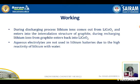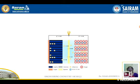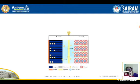During the discharging process, lithium ions come out from lithium cobalt oxide and enter into the intercalation structure of graphite. During recharging, lithium ions from graphite enter back into LiCoO2. Looking at the diagram, you can see the layered structure — inside those layers the lithium ions go and sit. That is called intercalation. The ions settle in the layer-like structure and come back out during recharging.